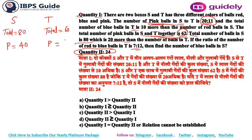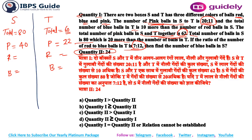Now, in T the total is 60 and there are only three colors — red, blue, and pink. Pink in T is 22, so the remaining balls for red and blue in T is 60 minus 22, which equals 38. The ratio of red to blue in T is 7 to 12. Let me change the color of the pen — red to blue ratio is 7 to 12 and the combined non-pink total is 38.